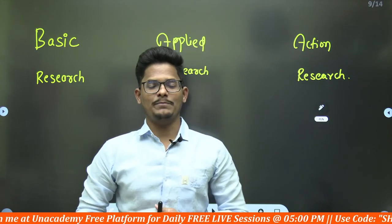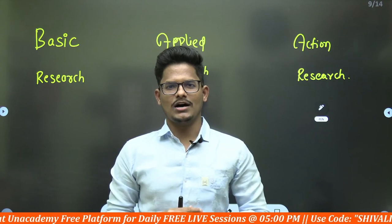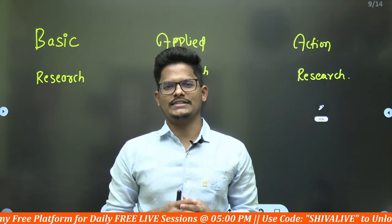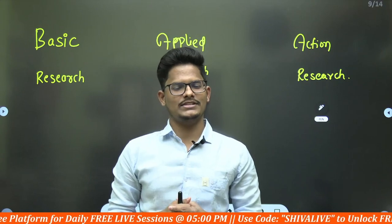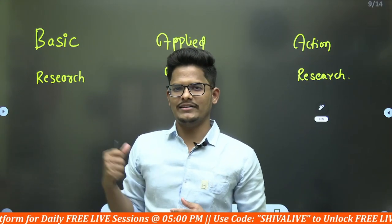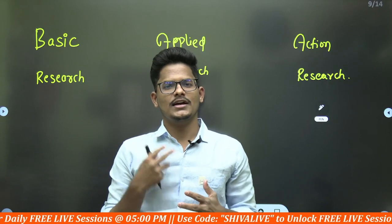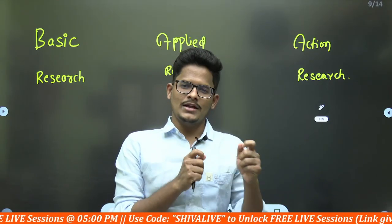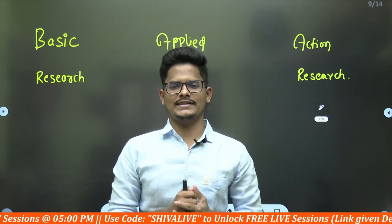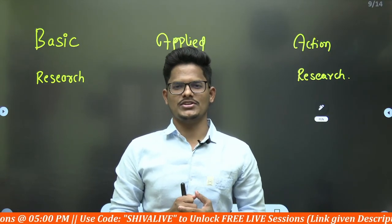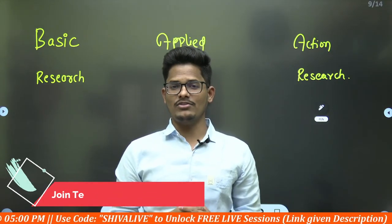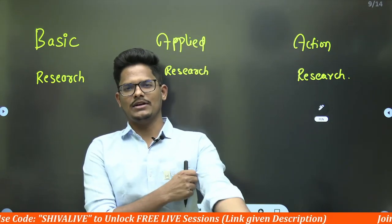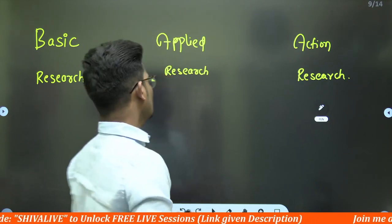In UGC NET Paper One, Research Aptitude — Types of Research series, this is the second video. We are going to discuss three main types of research: basic or fundamental research, applied research, and action research. This is a repetitive question from previous year UGC NET exam and various research entrance examinations.